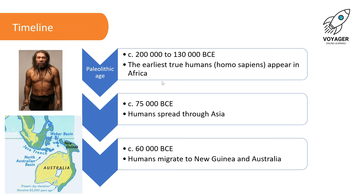The Paleolithic Age began around 200,000 BCE and lasted to about 130,000 BCE. This is when the earliest true humans, called Homo sapiens, appear in Africa. Here is a wax model of what an early Homo sapiens man would look like. From around 75,000 BCE, these Homo sapiens began to spread through Asia, and around 60,000 BCE they migrated to New Guinea and Australia. Australia, Papua New Guinea and Tasmania used to be connected, and the land was very close to modern day Indonesia, explaining how early man crossed from Indonesia to Australia across the Torres Strait.